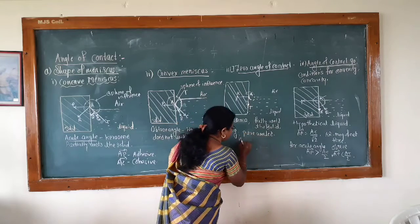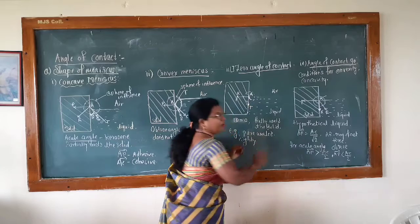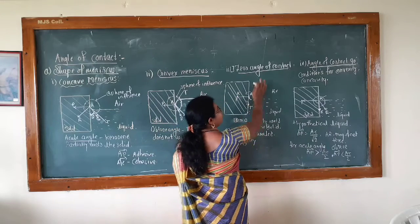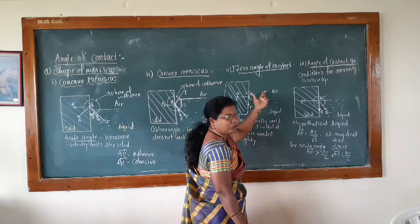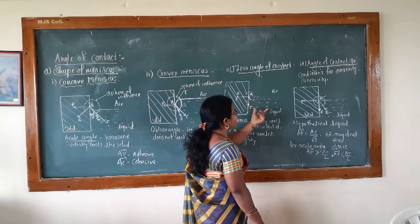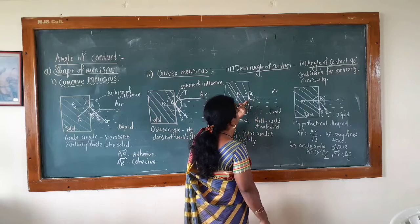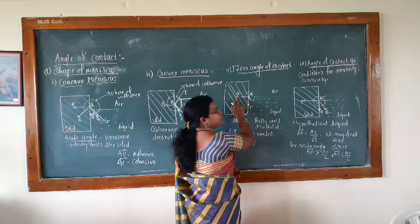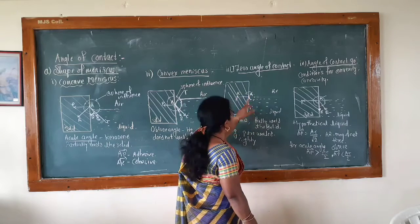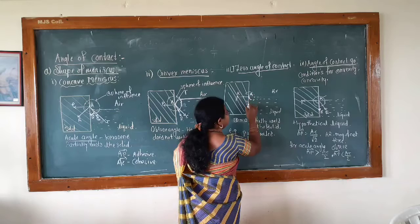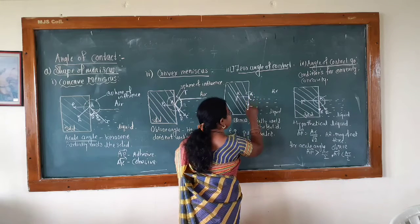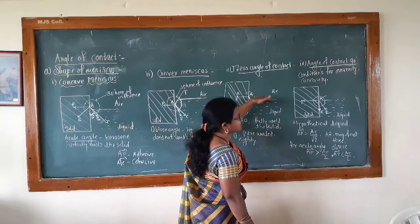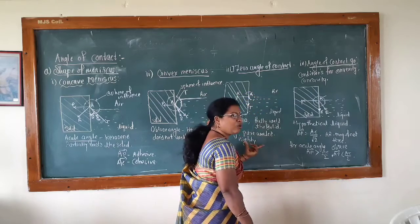The third case is the formation of a flat surface. It happens in highly pure water. Here is the solid surface, here is the liquid, here is the air. Air molecules are so few that the adhesive force is less. The resultant lies towards the adhesive force, and the tangent to this lies at the surface of the wall or at the contact surface. Therefore, there is the formation of an angle equal to zero, and this surface lies as a horizontal surface in the case of pure water.